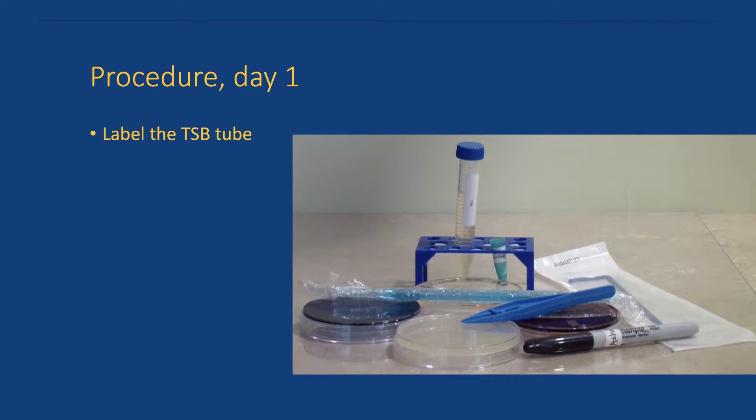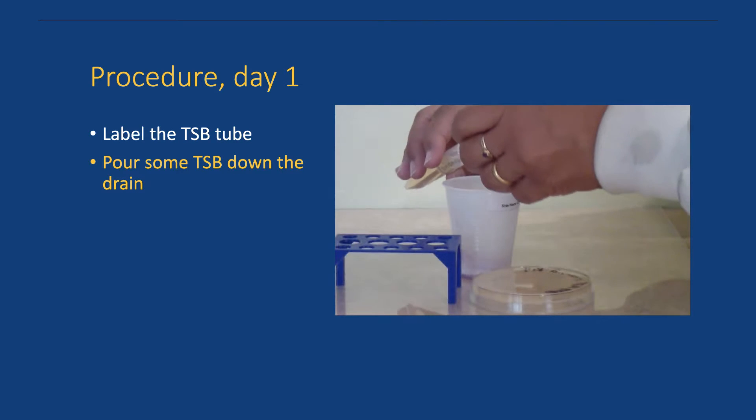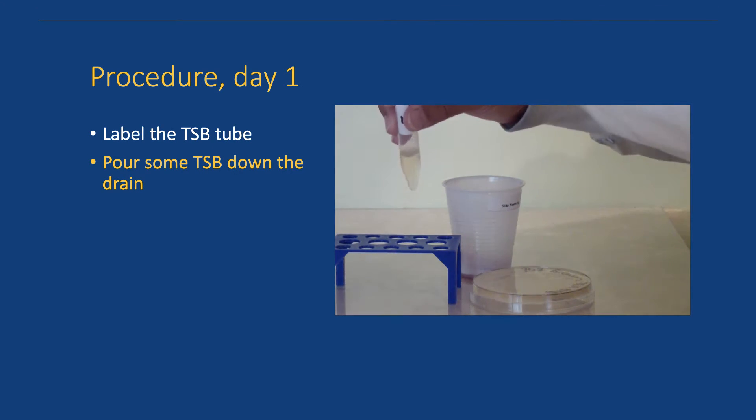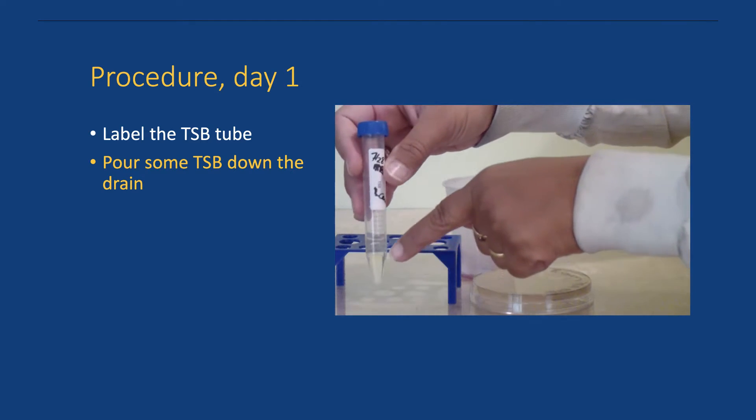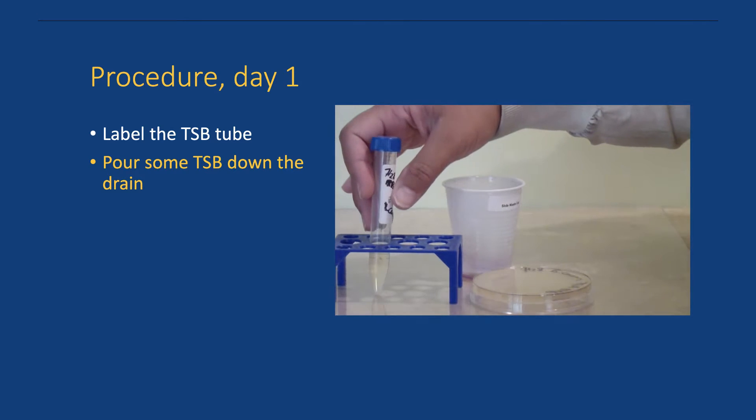On the first day label the TSB tube with the required information. Discard some of the TSB down the sink drain. You only need about two to four milliliters of TSB. The exact amount isn't that important. The broth is sterile so it can just go down the drain.